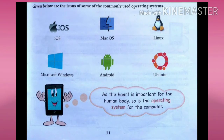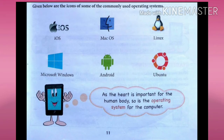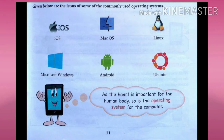The operating system is necessary for the computer system to operate. An operating system is a software which is very suitable for the computer. It acts as an interface between you and the computer. It manages all the hardware and software on a computer and makes them work together. Hardware includes keyboard, mouse, and it is software which manages all these things.